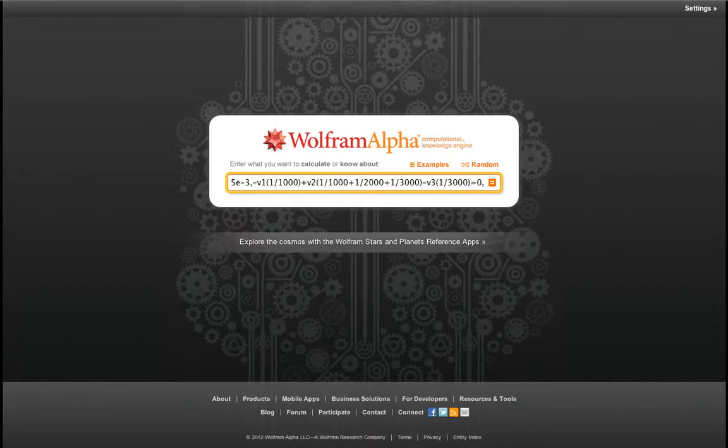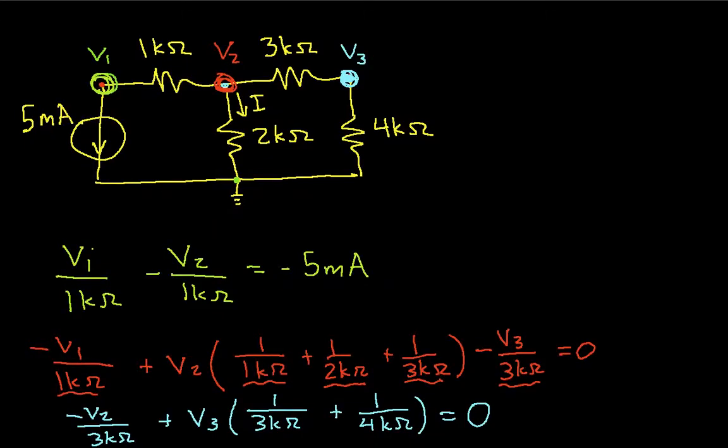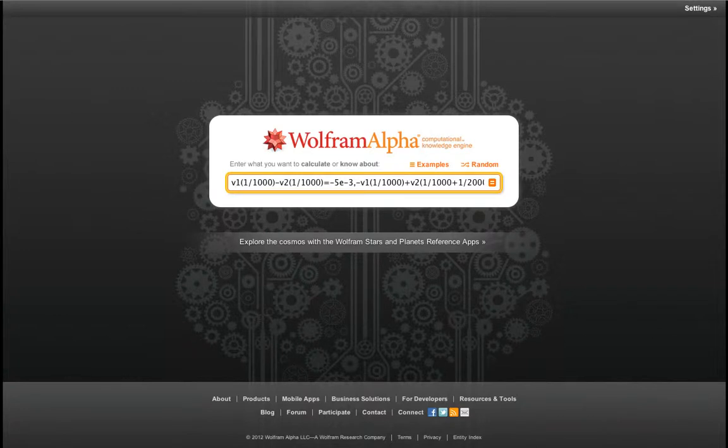Okay, let's go back and see what our last equation is. We have the minus V2 over 3kΩ, plus V3 times the stuff. So let's put that in. And it appears that it's reset my entry window. Okay, so we have minus V2, 1 over 3kΩ, plus V3 over 3kΩ plus 1 over 4kΩ. And this is equal to 0. Now again, when I'm doing the computations, I'm not putting in units because WolframAlpha and almost no other tool will understand what the units mean.